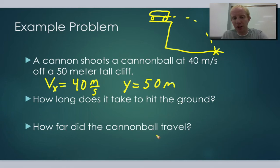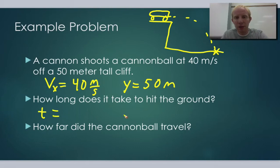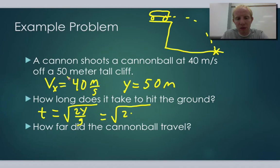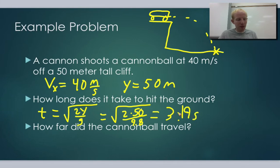How long does it take to hit the ground is a y direction question — we're looking at the time of free fall from the top of the cliff. We're going to use our y direction equation rewritten as t equals the square root of 2y over g. Plugging in, we get the square root of 2 times 50 over 9.8. That gives us a fall time of 3.19 seconds. We used the y direction to determine how long it's going to fall.